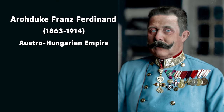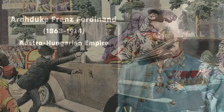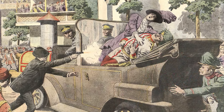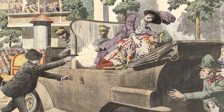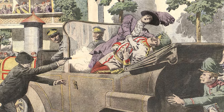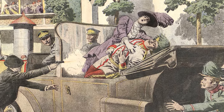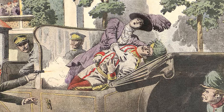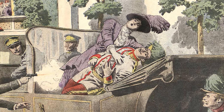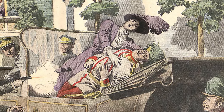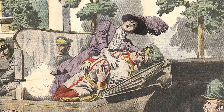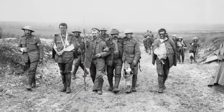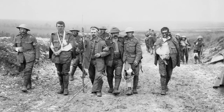Archduke Franz Ferdinand was the heir presumptive to the Austro-Hungarian Empire. Gavrilo Princip, a Bosnian Serb nationalist, assassinated Franz Ferdinand and his wife Zofie on June 28, 1914 in Sarajevo, Bosnia. Princip was a member of a group aiming for the independence of South Slavic peoples from Austro-Hungarian rule. The assassination was intended to spark a conflict that would lead to the liberation of the South Slavs.